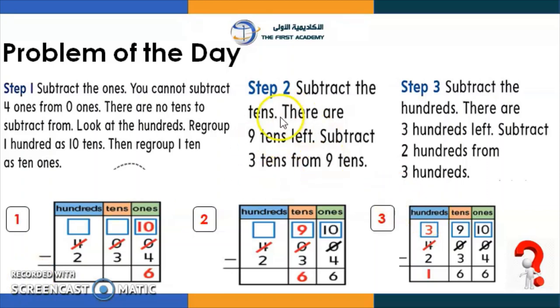So let's read the steps together here. I want you to listen to the steps. Please be focused and listen carefully. So step 1, subtract the ones. You can subtract 4 ones from 0 ones. We're talking about this here. So there are no tens to subtract from. So there's no tens over here because it's zero also. So look at the hundreds. We go to the hundreds. Regroup 100 as 10 tens. Then regroup 1 ten as 10 ones.